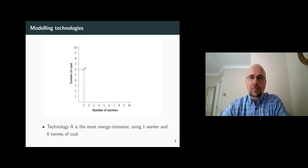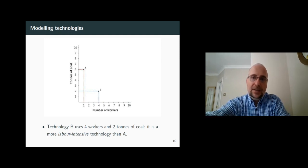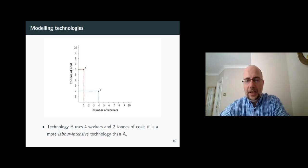Alternatively, you can combine your inputs in a different way to get the same amount of output. You can, for example, use four workers and two tons of coal and still get your target output. As this technology uses more labor and less energy, we call it a labor-intensive technology.